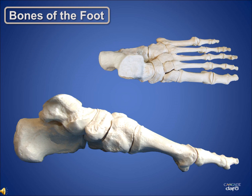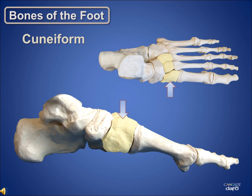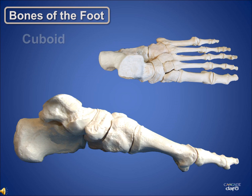Distal of the navicular are the cuneiform bones. There are three of them, numbered 1, 2, and 3, starting from the medial side. They are referred to as the first cuneiform, the second cuneiform, and the third cuneiform. On the lateral side, just distal of the calcaneus, is the cuboid.